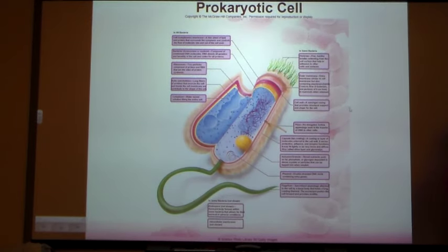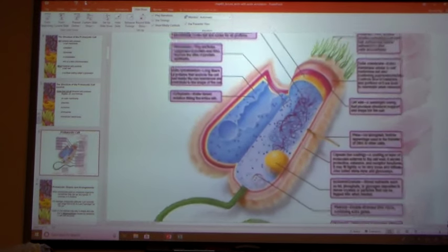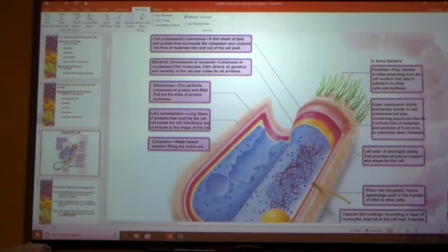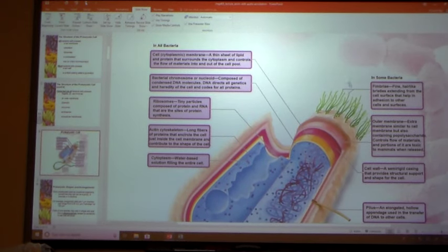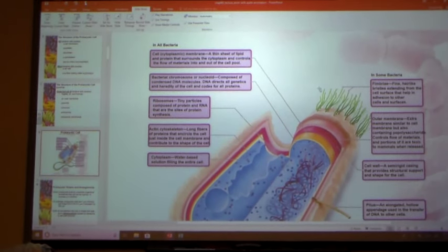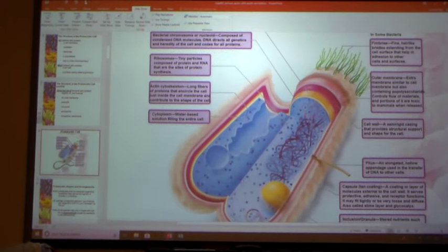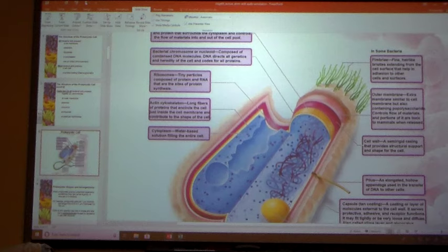This slide shows the details of bacterial structure. On the outside, there might be little hairs sticking out. These are called fimbriae — hair-like bristles extending from the surface that help in adhesion.